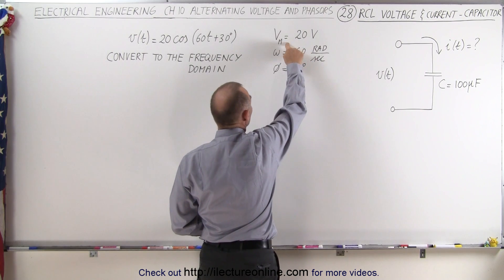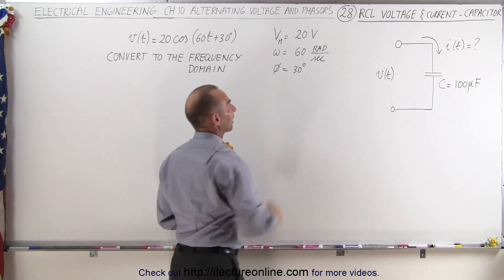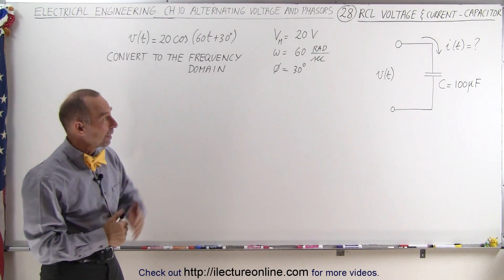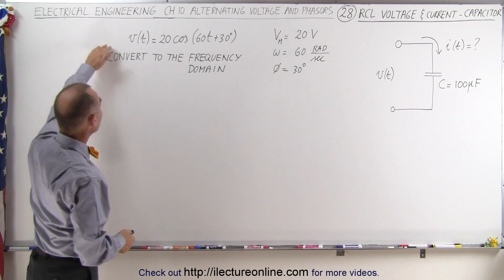We have a 20 volt maximum voltage input, an angle of frequency of 60 radians per second, and a phase angle of 30 degrees, and our capacitor has a capacitance of 100 microfarads. So here's our input voltage.